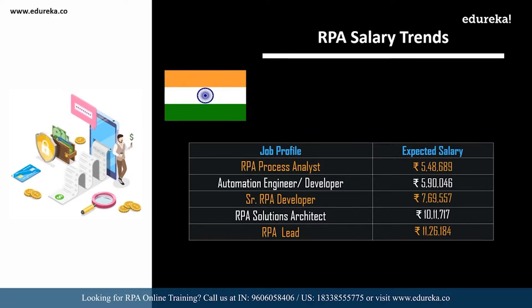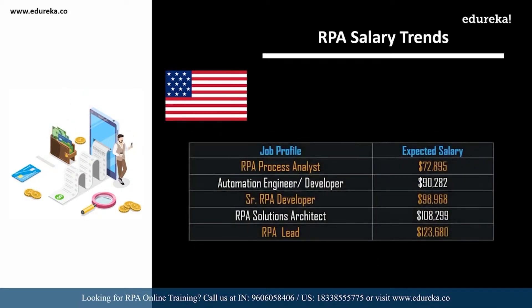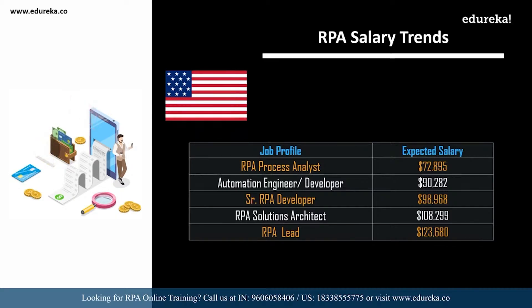An RPA lead in India can expect around 11,26,000 per annum. In the USA, an RPA process analyst can expect around 72,000 dollars; an automation engineer or automation developer around 90,000 dollars; a senior RPA developer around 98,000 dollars; an RPA solutions architect around 1,00,000 dollars; and an RPA lead around 1,23,000 dollars. There's a huge amount of money available in this career field.